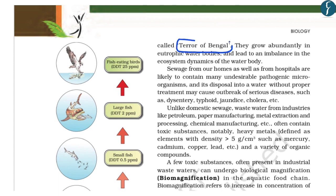Water hyacinth grows evidently in eutrophic water bodies — those where nutrient discharge is so high that it leads to excessive growth of plants, ultimately causing the death and drying up of those water bodies.